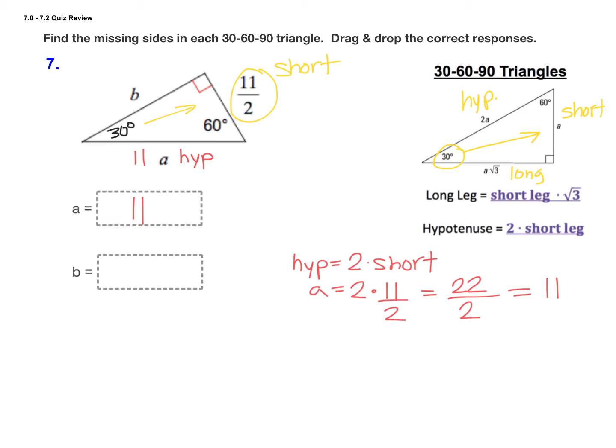Now let's find the length of the long leg. Remember that the long leg equals the short leg times the square root of 3. So here, b equals 11 over 2 times the square root of 3. You can keep the whole expression over 2, so you get 11 root 3 over 2. Drag and drop that into the box.